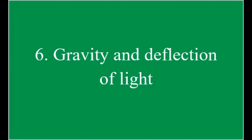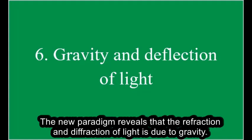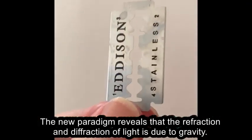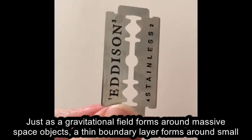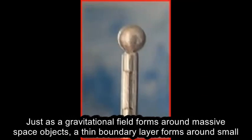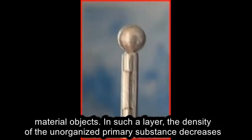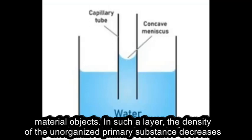6. Gravity and Deflection of Light. The new paradigm reveals that the refraction and diffraction of light is due to gravity. Just as a gravitational field forms around massive space objects, a thin boundary layer forms around small material objects.